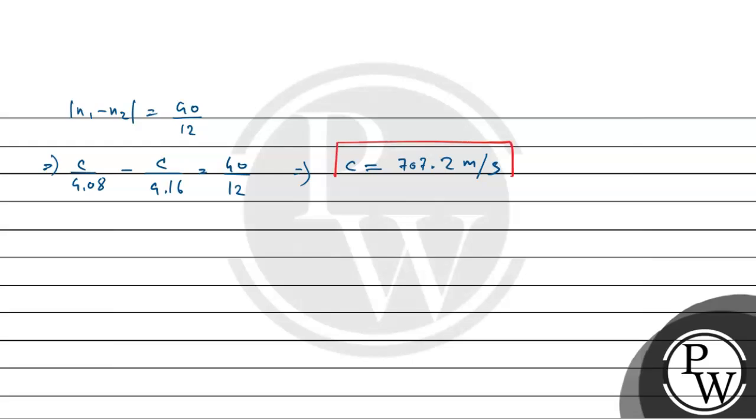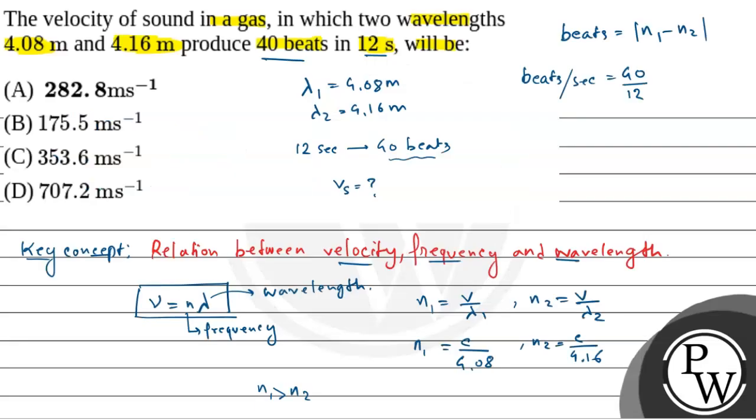This is our final answer. Option D, 707.2 meter per second, is the velocity of sound in the gas. Hope you understand it. Best of luck.